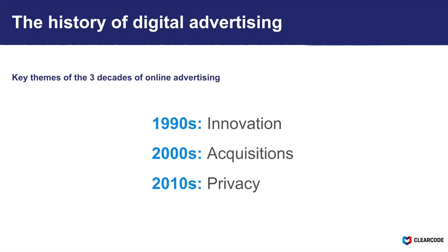There have been many key events over the years that have helped shape the ad tech and programmatic advertising industry. If I had to assign a theme to each of the three decades: in the 1990s, when online advertising first appeared, there was a lot of innovation and this is when we saw the first ad tech companies emerge. The 2000s were dominated by acquisitions, especially by large tech companies. And from 2010 onwards, the key theme has been privacy.